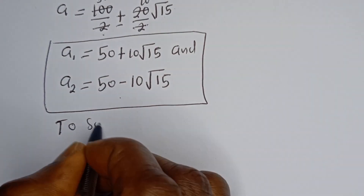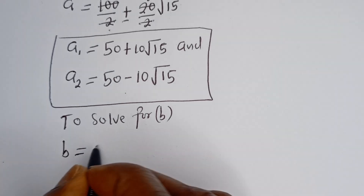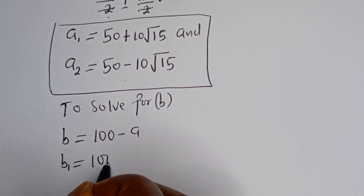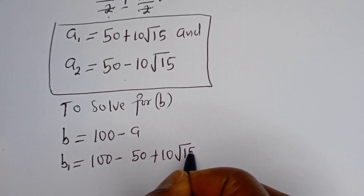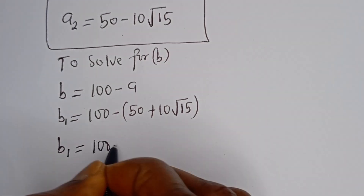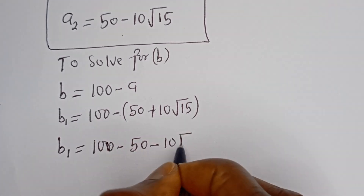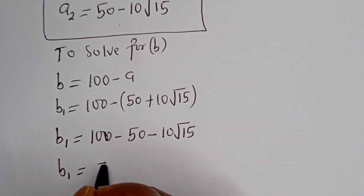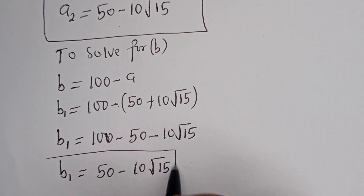To solve for B, we have B is equal to 100 minus A. For B1, since A1 is 50 plus 10 root 15, then B1 is equal to 100 minus 50 minus 10 root 15. This is 50 minus 10 root 15. This is the value of B1.